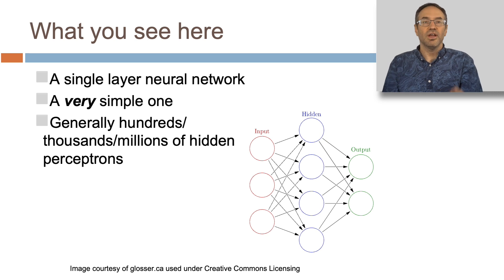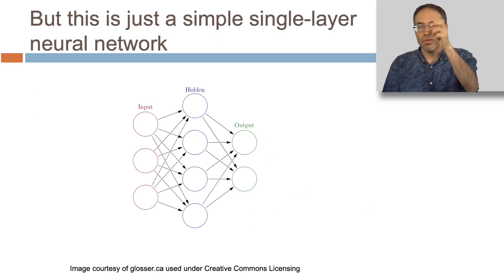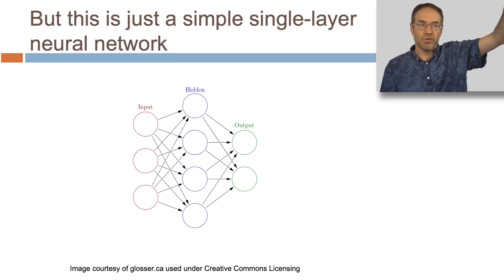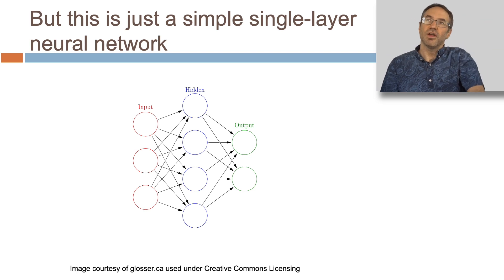What you see here is a single layer neural network. It's just got a single layer of perceptrons, and it's a very simple one. Because generally there are hundreds, or thousands, or millions, or more of hidden perceptrons. And again, this is just a simple single layer neural network. In a single layer network, you have one set of perceptrons in between your inputs and your outputs. That could be a million perceptrons in between those inputs and outputs, but it's still only a single layer of them.